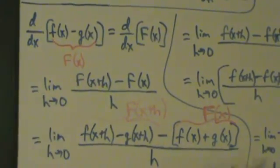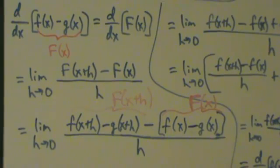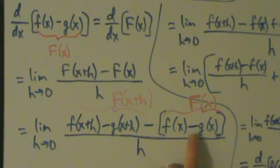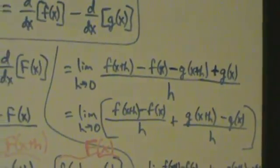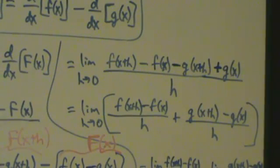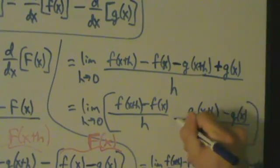When we drop the brackets in the next step, things are a little different. When we distribute the minus sign, we get minus f(x) but then plus g(x). Also notice we have minus g(x+h). So what actually happens is we end up with plus g(x), which is a bit unexpected — we want g(x+h) minus g(x), not minus g(x+h) plus g(x).